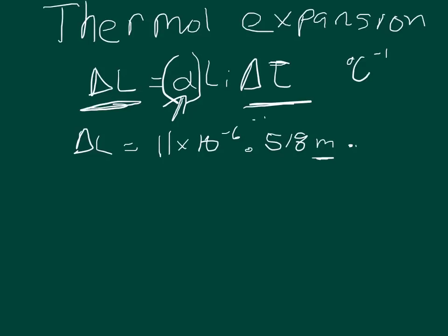We need to multiply this by the change of temperature, which is T final minus T initial. The temperature change was... the final temperature was 34, and the initial temperature was negative 16. So 34 minus negative 16 makes it plus 16. So 34 plus 16 is 50.